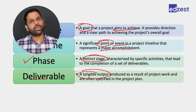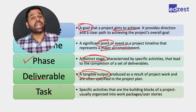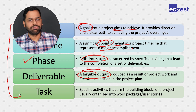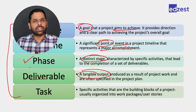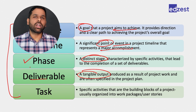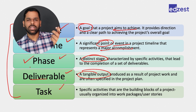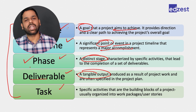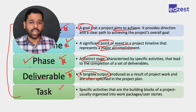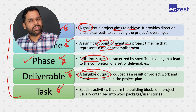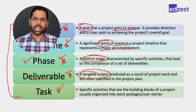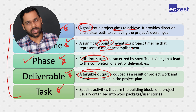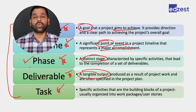Deliverables are tangible outputs produced as a result of project work. Tasks are the actions we take. You likely know these things, but in the rush of the exam you should not miss their exact meaning. For PMP prep, it's not about solving 10,000 questions — do 300 to 400 questions but do them well and most importantly review them well. Quality of review is far more important than quantity.